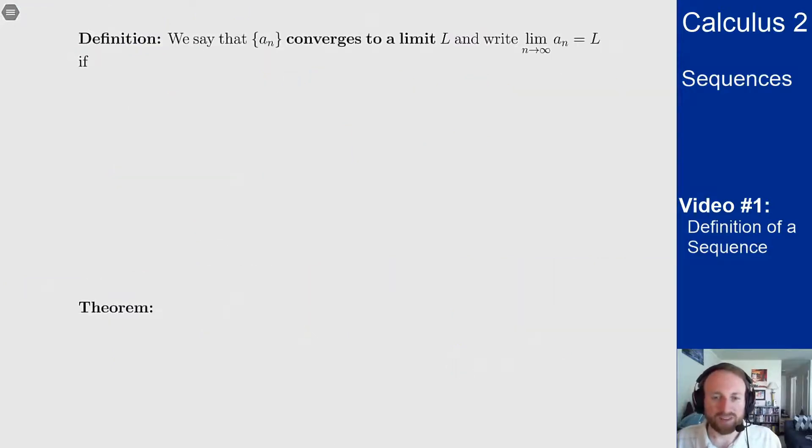One other really important definition for sequences is the idea of convergence. We say that a sequence an converges to a limit L, and write limit of an equals L, if we get closer and closer to L as n goes to infinity.